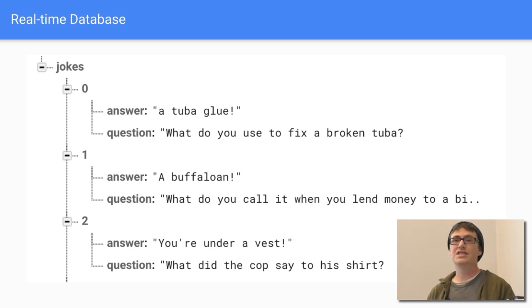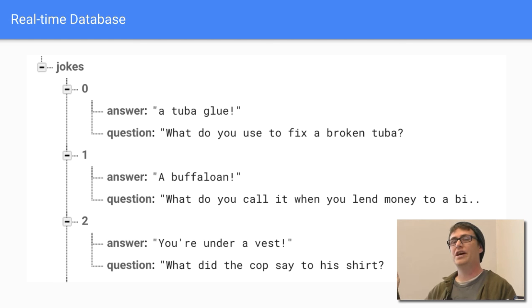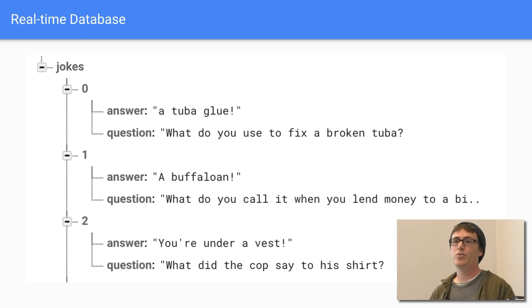Here's an example of what the data actually looks like. I created a jokes node and put in jokes 0, 1, and 2, each with a question and answer. So if you wanted to access joke number 1, you could do that and it would just pull down that one object.